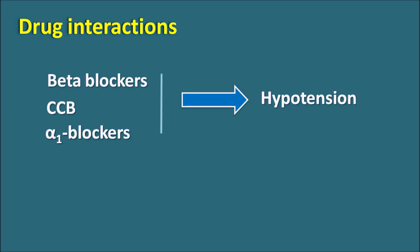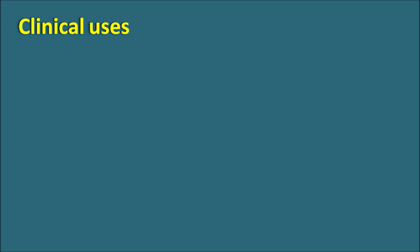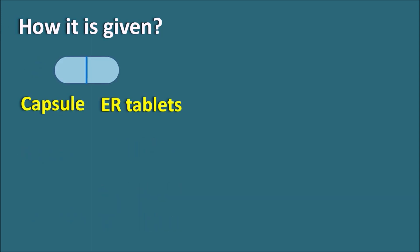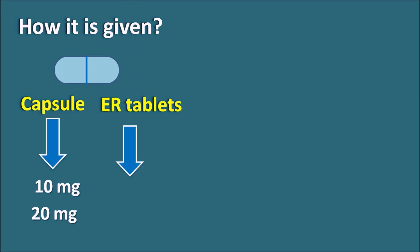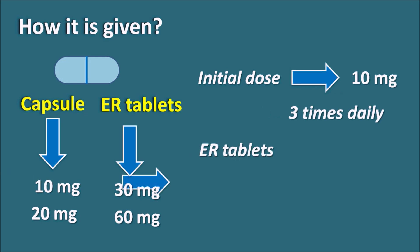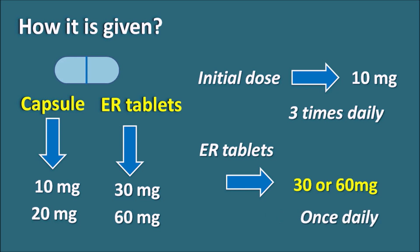What are the clinical uses? Nifedipine acts on the vascular smooth muscle and is mainly used as an anti-hypertensive. It can also be used in vasospastic angina, where the angina is produced by fixed narrowing of blood vessels, and for management of chronic stable angina along with other vasodilators. Nifedipine is available as capsules (10 mg and 20 mg) and as extended-release tablets (30 mg, 60 mg, and 90 mg). The initial dose is 10 mg three times daily; as extended-release tablets, the initial dose is 30 mg or 60 mg once daily.